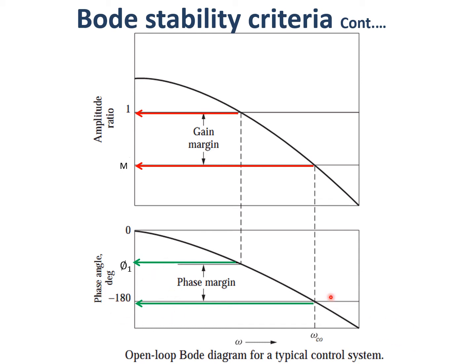So either you check at 180 degrees to see whether the amplitude ratio is less than one, or you look at amplitude ratio equal to one and check whether we have a phase angle margin. That's why we have two design methods: one is called the gain margin design and one is called the phase margin design — either deciding the crossover frequency to get the gain margin, or deciding the phase margin to see how much margin we can achieve. Both ways we can use, and this is the advantage of the Bode stability criteria.